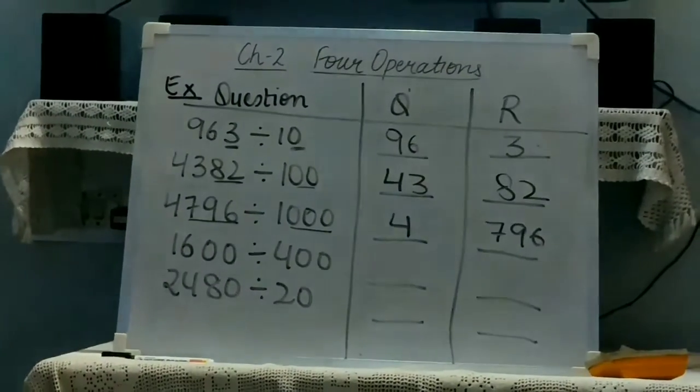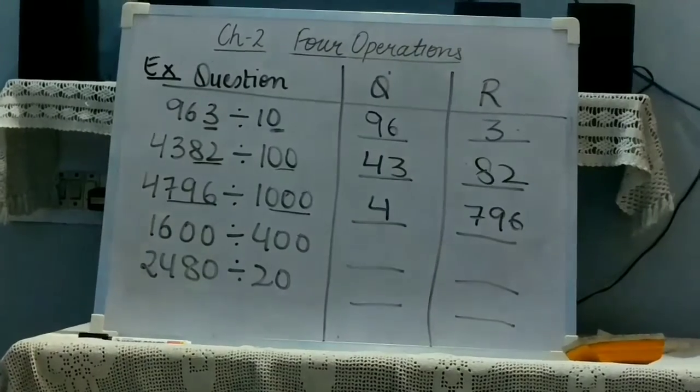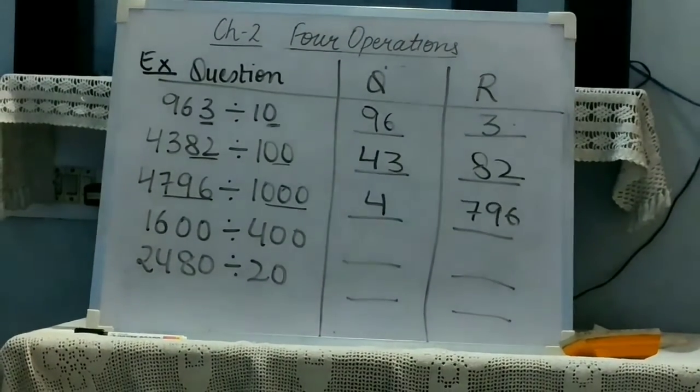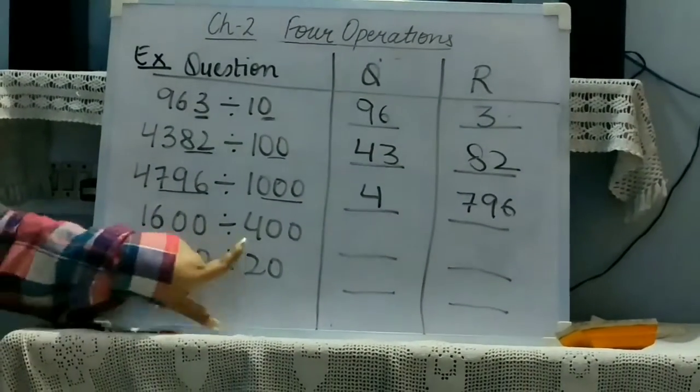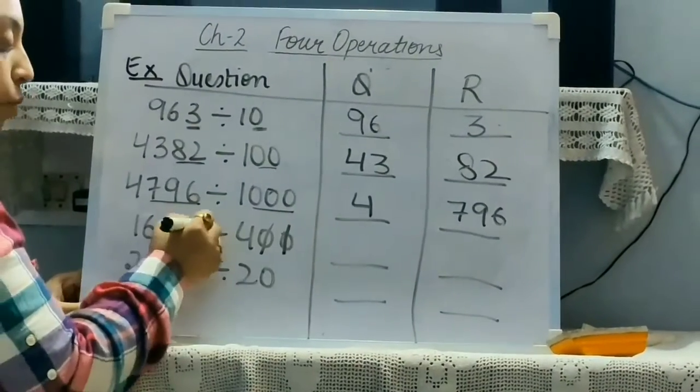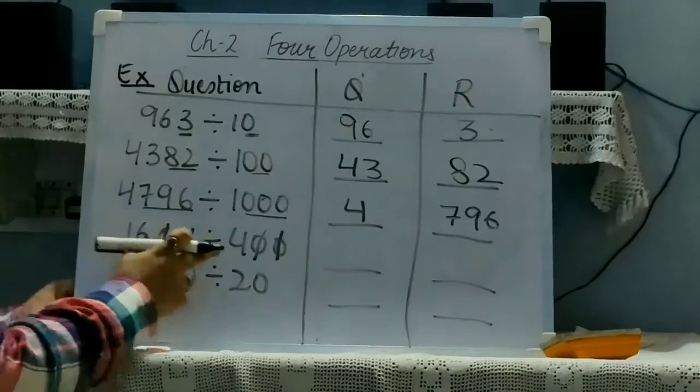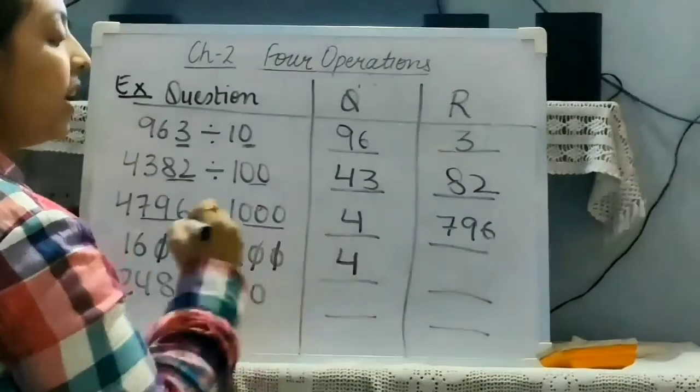But, if we have the divisor as the multiple of 10, except 10, 100, 1000, like 420, so the zeros will be cancelled first. 2 zeros will be cancelled with 2, now divide the rest. 16 divided by 4 is 4, nothing is left, so remainder will be 0.